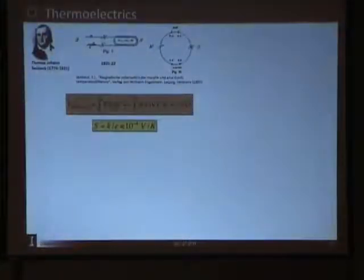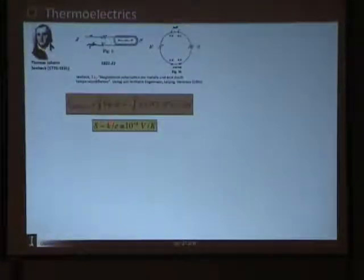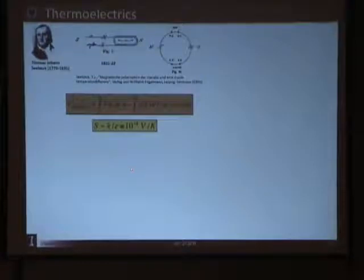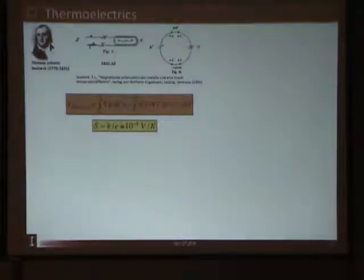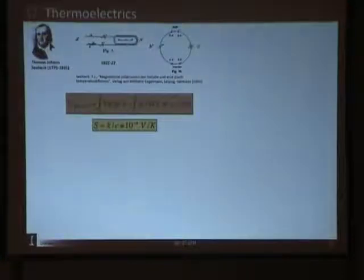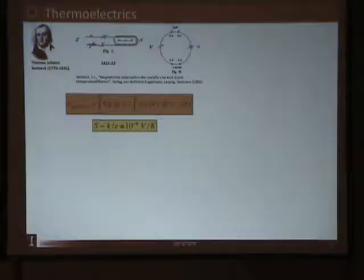The Seebeck voltage generated from the junction of two metals in contact is dependent on the temperature difference. The voltage is directly proportional to the temperature difference, and the proportionality constant is what we call the Seebeck coefficient. At a microscopic level, the Seebeck coefficient is a ratio of the entropy that an electron carries to the charge that an electron carries — essentially the ratio of the Boltzmann constant k_B to the fundamental charge e, which works out to about 100 microvolts per Kelvin. Metals are only a few tens of microvolts per Kelvin, but semiconductors go all the way from 100–200 up to 1000 microvolts per Kelvin, making semiconductors a better option for thermoelectric energy conversion.